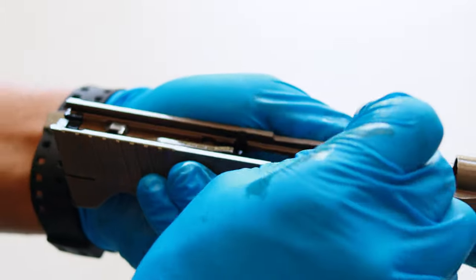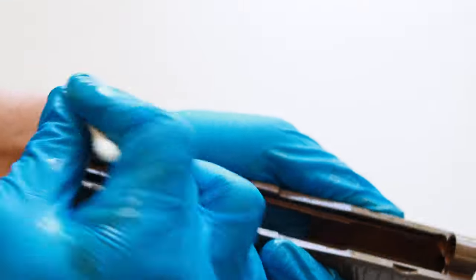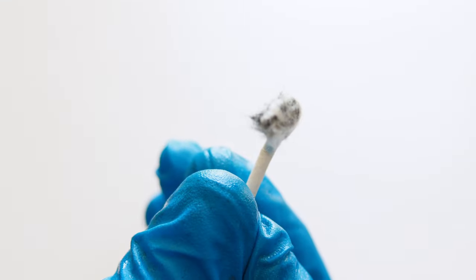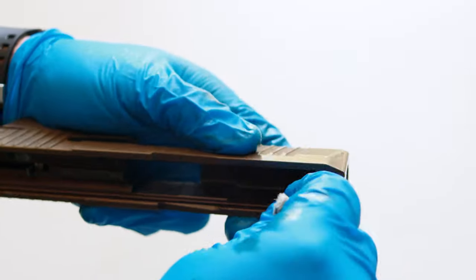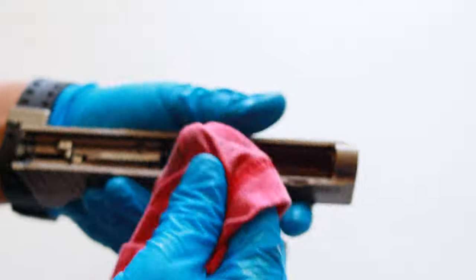Now I'm going to take a clean cotton swab and clean out all the excess dirt and CLP. You'll see that the cotton swabs come out really dirty at first. Just keep running clean cotton swabs through the rails until they come out clean. After the rails are completely clean, I'm going to go through the slide with a clean rag and wipe off all the excess CLP.